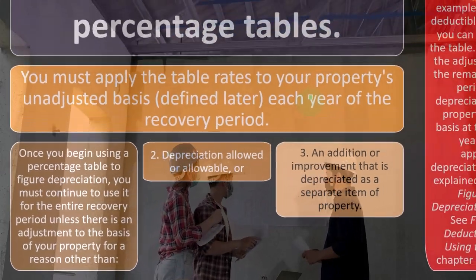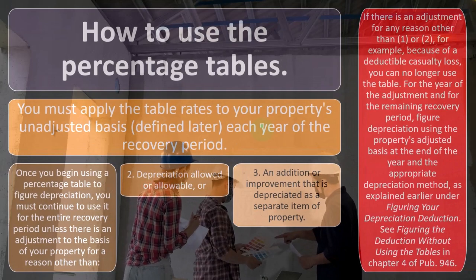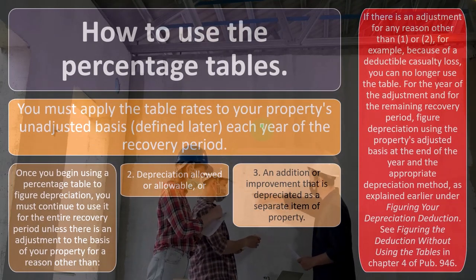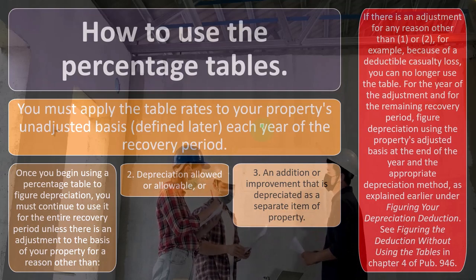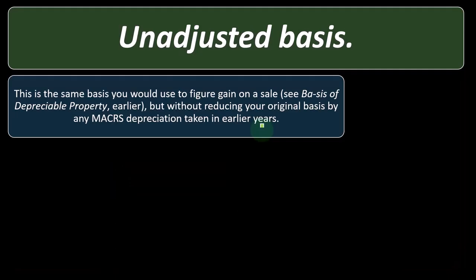If there is an adjustment for any reason other than those, for example because of a deductible casualty loss, you can no longer use the table for the year of the adjustment and for the remaining recovery period. Figure depreciation using the property's adjusted basis at the end of the year and the appropriate depreciation method as explained earlier under figuring your depreciation deduction.